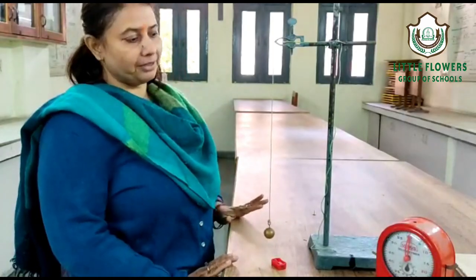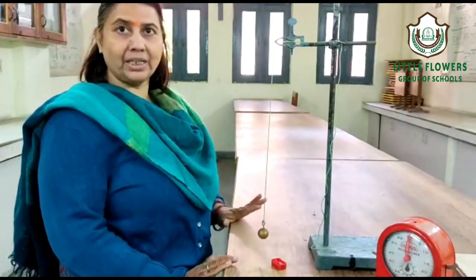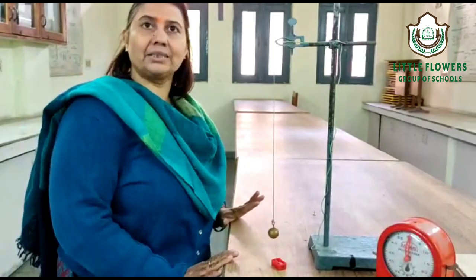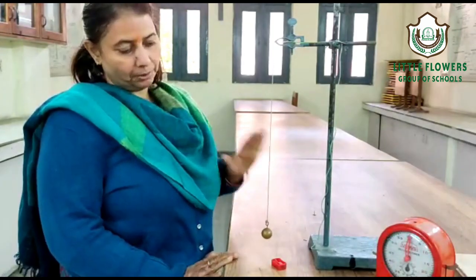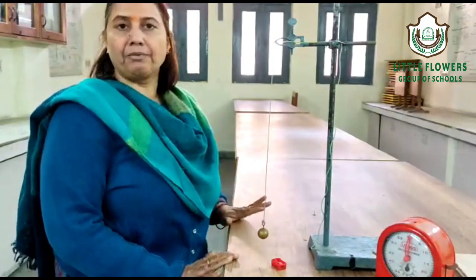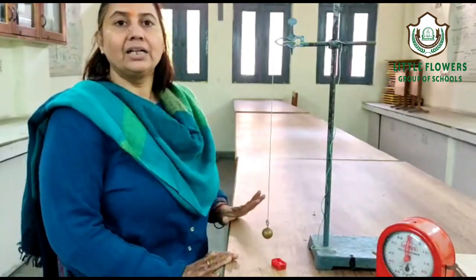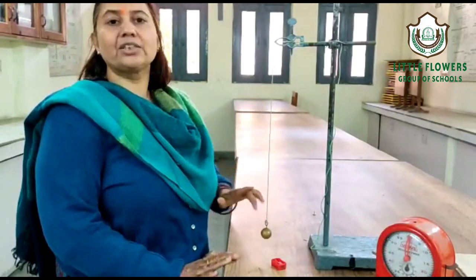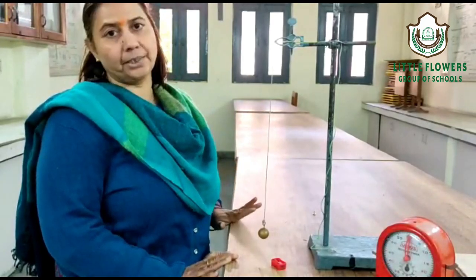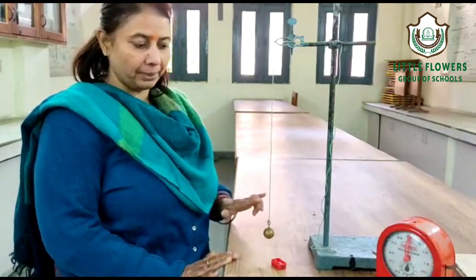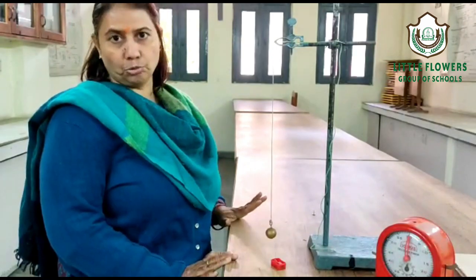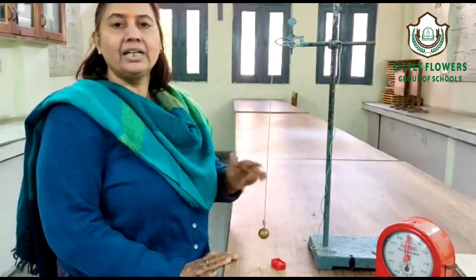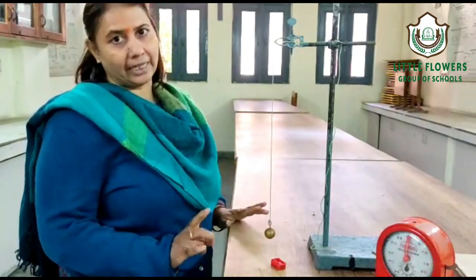Hello students, today we are going to perform a practical using a simple formula. The aim of this practical is to find the effective length of the second pendulum. A second pendulum means one whose time period is 2 seconds, so we need to find the length of that pendulum.